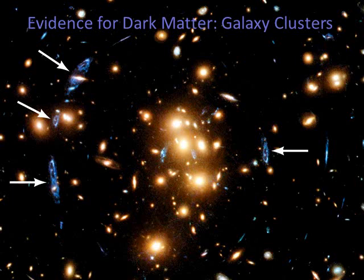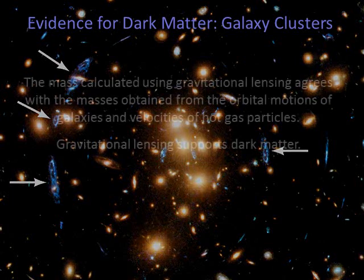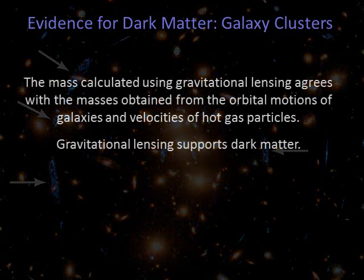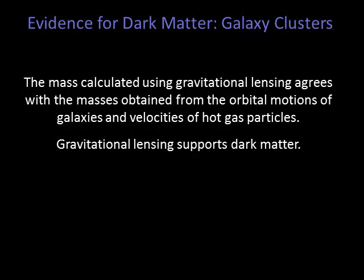This is a Hubble Space Telescope image of a galaxy cluster acting as a gravitational lens. The yellow elliptical galaxies are cluster members. The small blue ovals are multiple images of a single galaxy that lies almost directly behind the cluster's center. If you estimate the amount of mass in the cluster based on the luminous stars, there is not nearly enough to cause this sort of lensing. When astronomers calculate the mass using gravitational lensing, it agrees with the masses obtained from the orbital motions of the galaxies and the velocities of hot gas particles. Gravitational lensing supports dark matter.